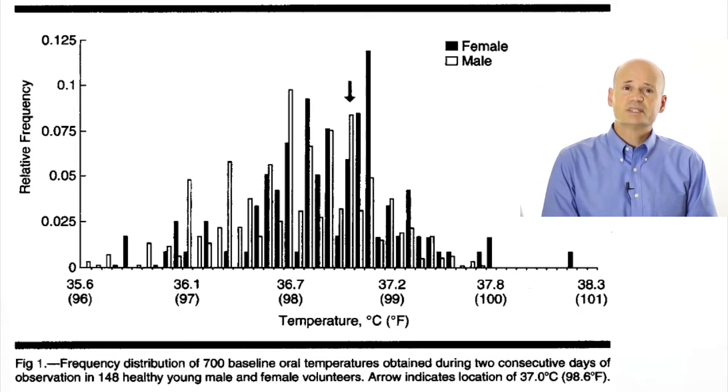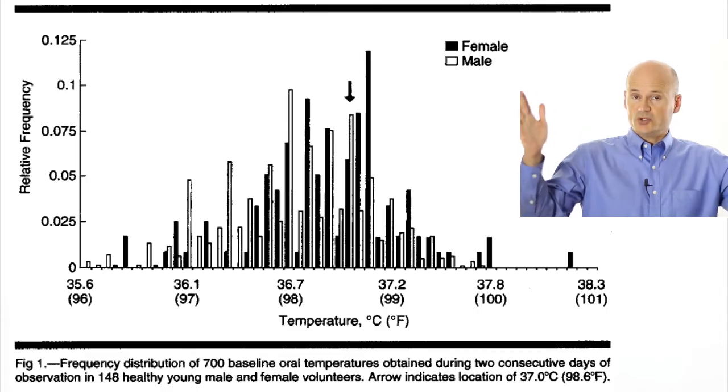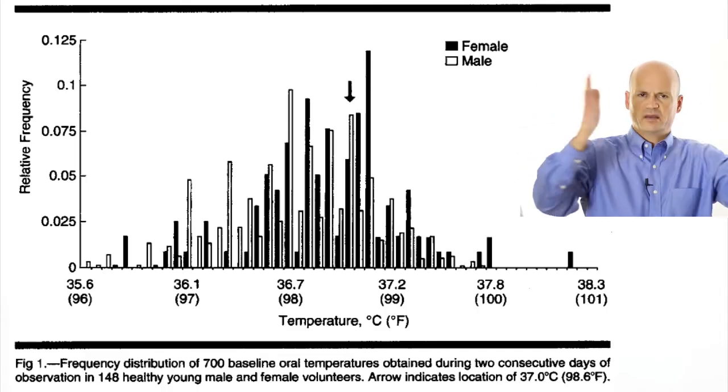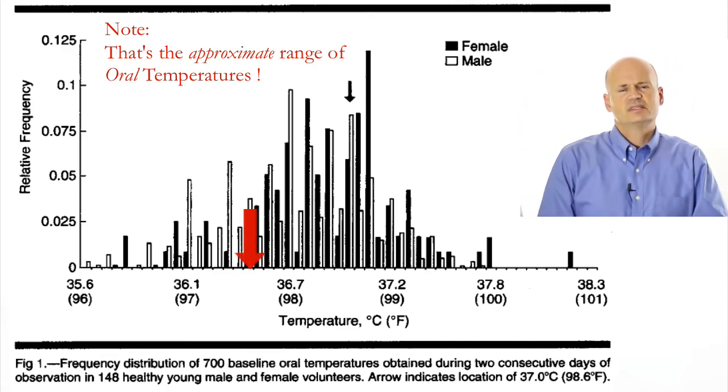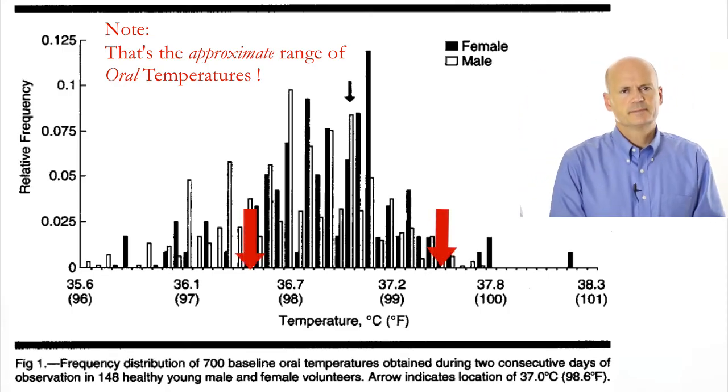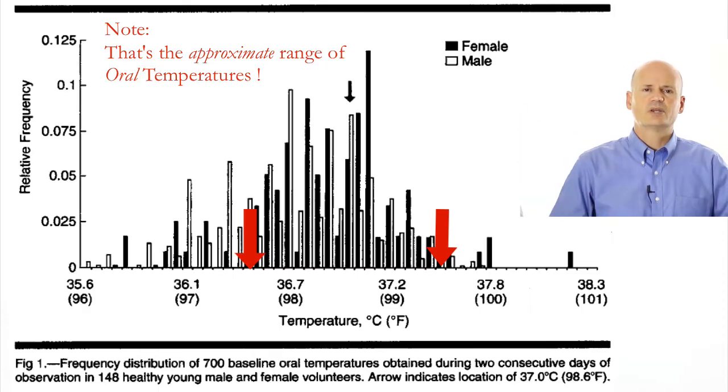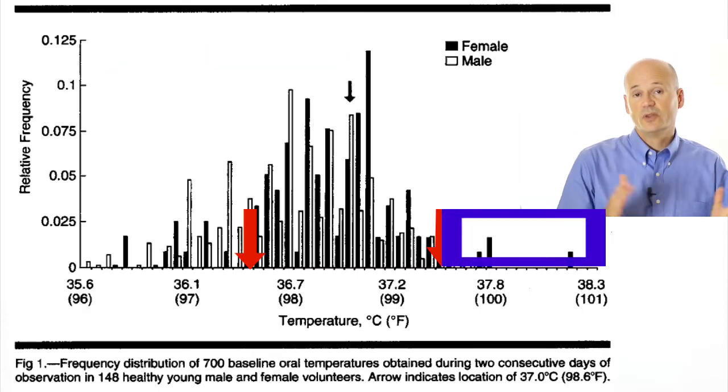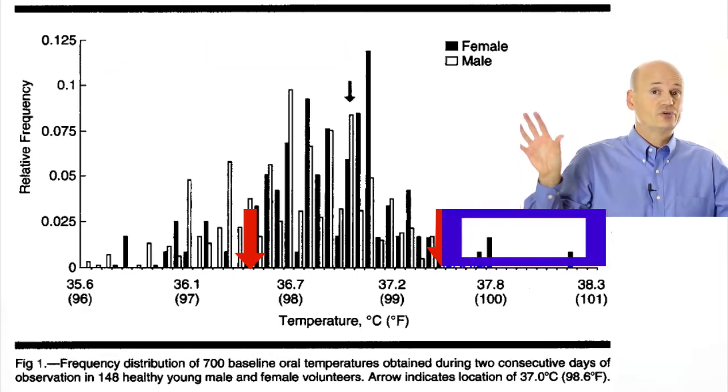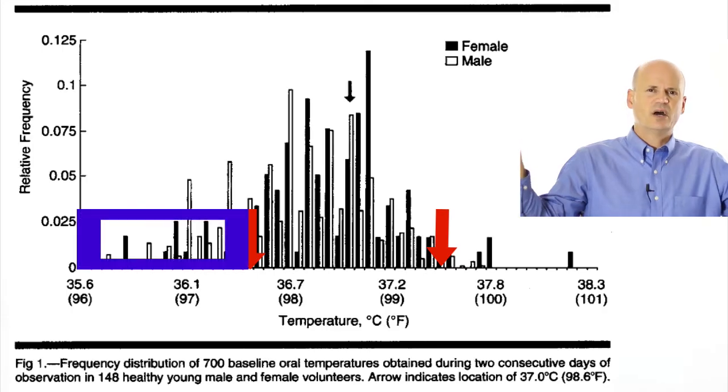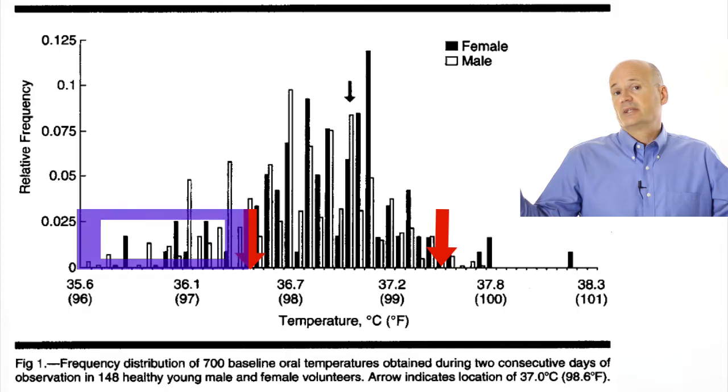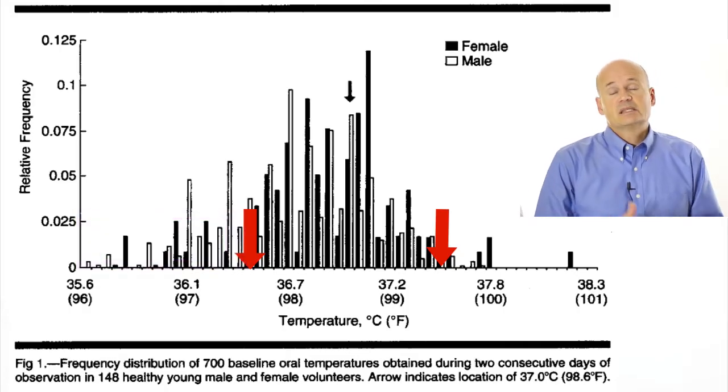So when it comes to temperature, the normal range that contains 95% of what's normal is between about 36.5 degrees Celsius and 37.5 degrees Celsius. Above that range and we'll consider you abnormal. Even though, now we know, you have a 2.5% chance at the top end or a 2.5% chance at the bottom end of being just you, but being considered abnormal.